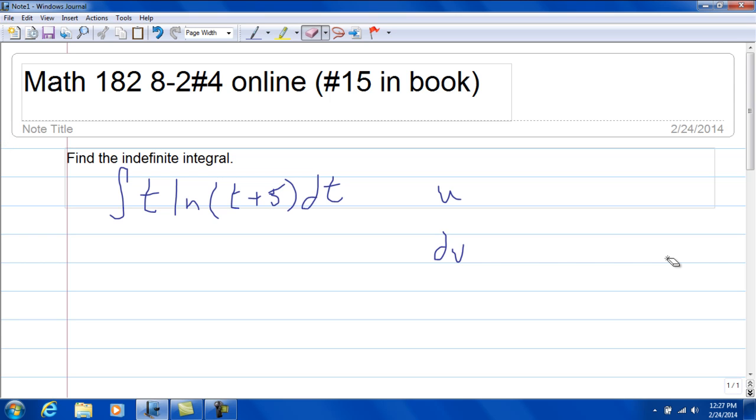We're going to integrate that using integration by parts. Now it's tempting to say that u would be t, because the du would start going away. However, integrating natural log of t plus 5 is a real problem.